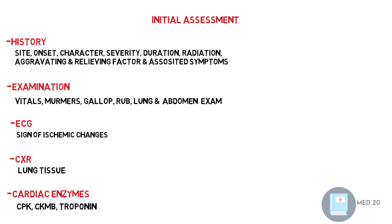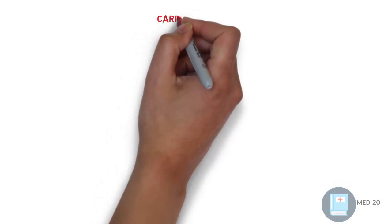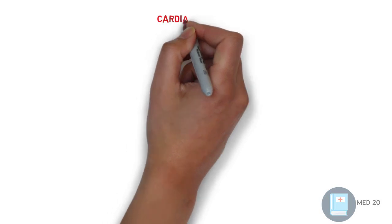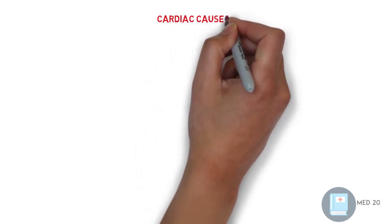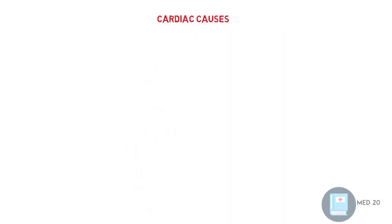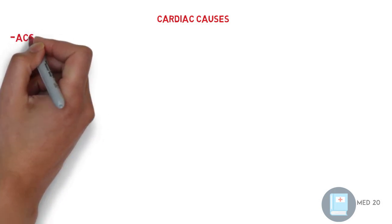Causes of chest pain. Chest pain has a lot of differential diagnoses, and it's impossible to cover everything. But we're going to talk about each system and the most important causes. First, cardiac causes. The most important and most dangerous to rule out is acute coronary syndrome.